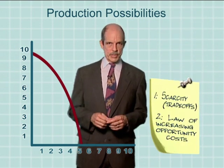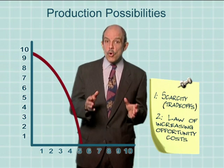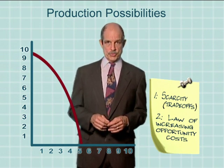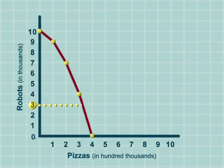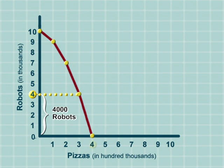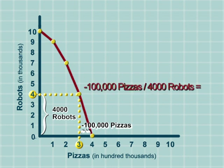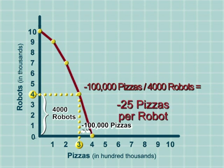The second lesson of the Production Possibilities Curve is a little more subtle: the more you make of anything, the greater its opportunity cost. Go from making zero robots to 4,000 of them and we get quite a payoff. What does it cost us in terms of pizza? The chart makes it clear: 100,000 fewer pizzas. That's minus 100,000 pizzas divided by 4,000 robots, so the first 4,000 robots cost an average of 25 pizzas per robot. The minus sign simply says this is a cost — a subtraction from what we had.